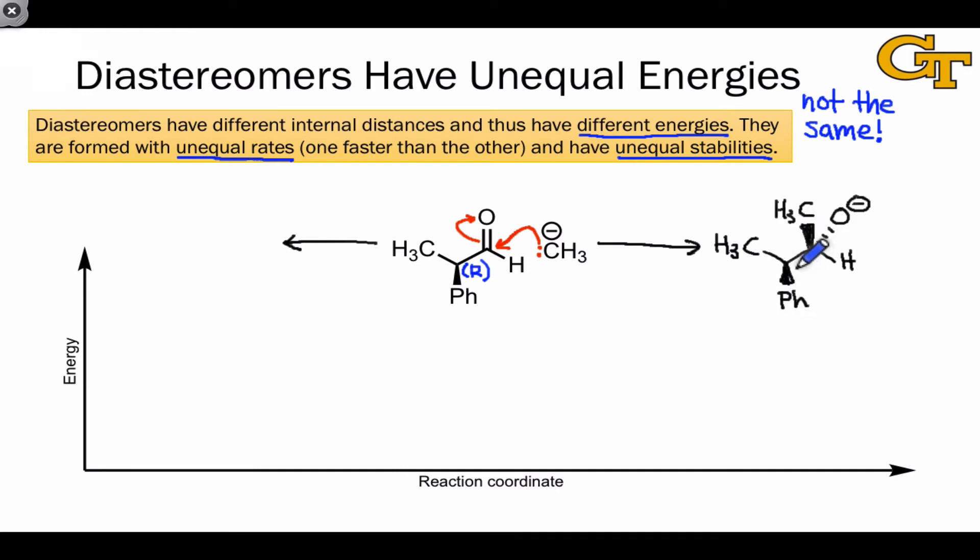Consequently, addition of the methyl anion to the top side, or from above, leads to an R-S product, while addition of the methyl anion from below leads to an R-R product. These two possible products differ at one of their configurations, but not all of them. And as a consequence, the two molecules are related as diastereomers.